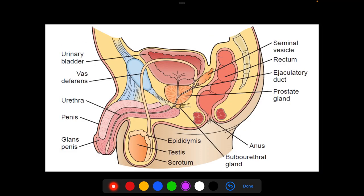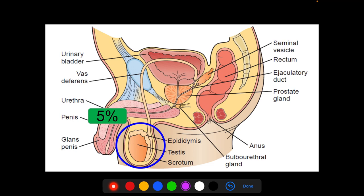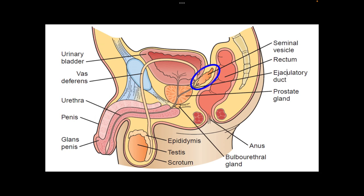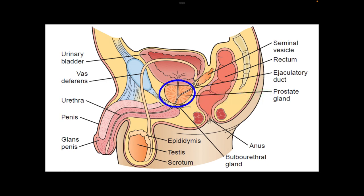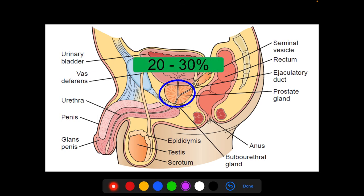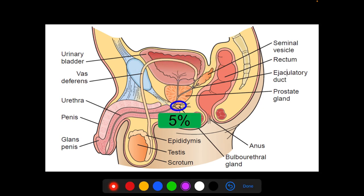The parts of the male reproductive system that contribute to semen fractions are: the testis containing spermatozoa at 5%, the seminal vesicles contributing 60 to 70% of semen fractions, the prostate contributing 20 to 30% as prostatic fluid, and the bulbo-urethral gland contributing 5% of the semen fraction.